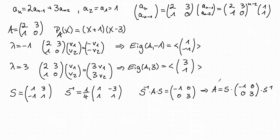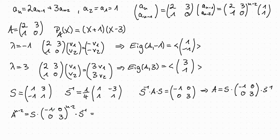Now it is easy to compute the power of A. So A^{n-2} is just S times the diagonal matrix to the power n-2, times S⁻¹. A diagonal matrix is easy to raise to powers, since we just compute the powers of the diagonal entries. So this is S·[[ (-1)^{n-2}, 0],[0, 3^{n-2}]]·S⁻¹.